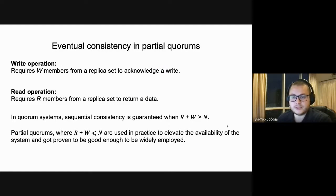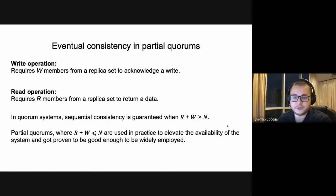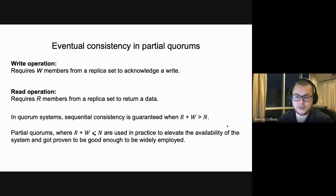The simplified logic of data stores employing quorum techniques: when a write operation from the client arrives at one member of the data store system, the response is returned to the client only after a particular number of members acknowledge the operation — typically called the write quorum. The same logic applies to read operations with a possibly different number of members required — called the read quorum. In quorum systems, sequential consistency is guaranteed when read and write quorums intersect with each other.